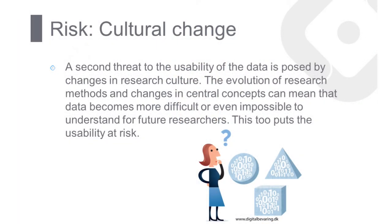Changes in research culture are a second kind of threat to the usability of data. The evolution of research methods and changes in central concepts can mean that data becomes more difficult or even impossible to understand for future researchers. This too can make the data unusable. Archives mitigate these risks by monitoring and responding to changes in technology and in research culture — for example, by converting files to new file formats or by enhancing documentation and metadata.